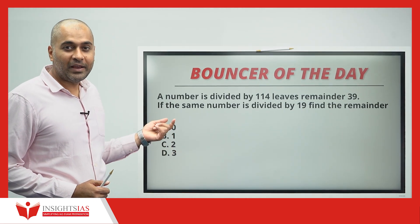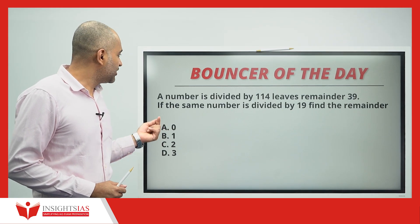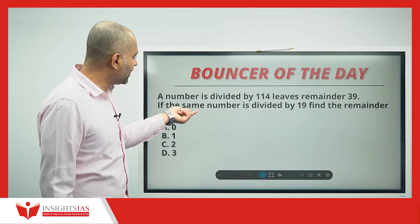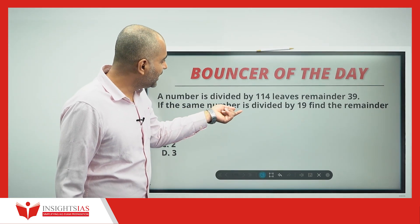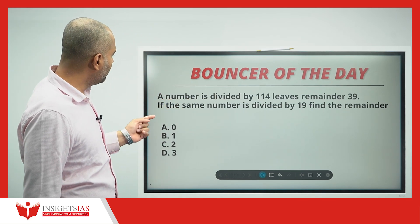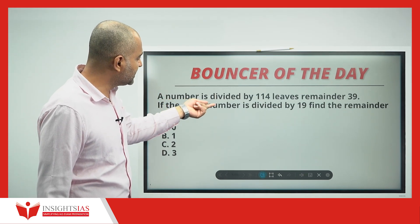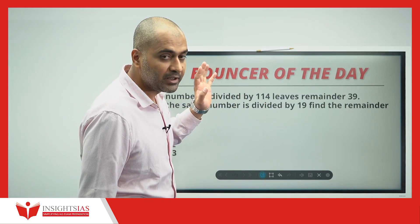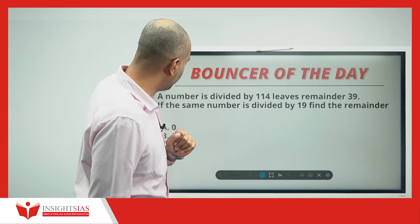At the beginning, we will take the bouncer of yesterday's question. This was yesterday's homework question: a number is divided by 114 and leaves the remainder 39. When the same number is divided by 19, find the remainder.